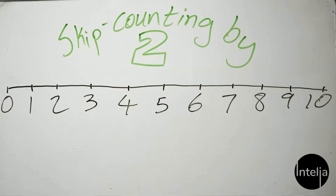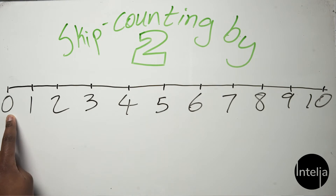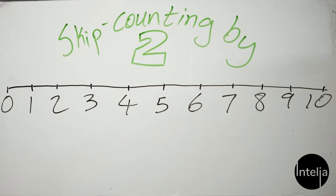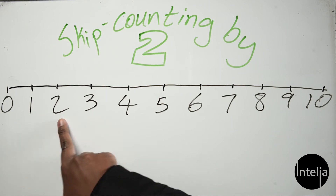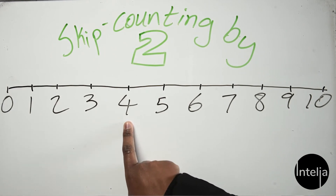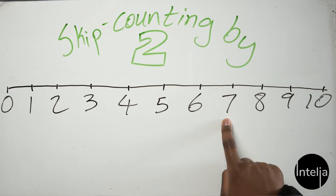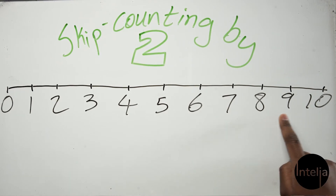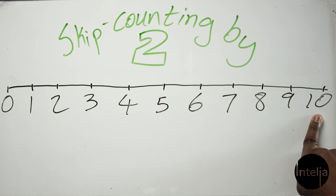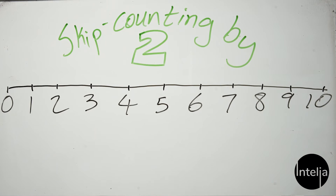Hi friends, welcome! Today I'm going to be teaching you how to skip count in twos — in other words, how to count in twos. Let's head straight into it. If you look at my board over here, I have numbers from 0 up to 10. Now, how you normally count is 0, 1, 2, 3, 4, 5, 6, 7, 8, 9, and 10.